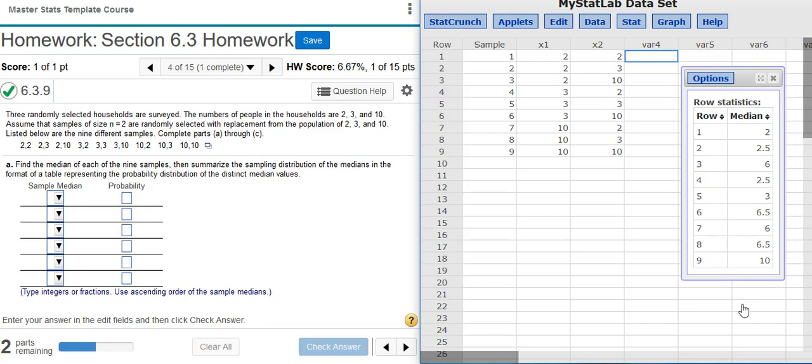Now I've got all the median values that I need to construct my probability table. When we're constructing the probability table, we're going to ignore this first column for row, because it's just listing the different rows here.